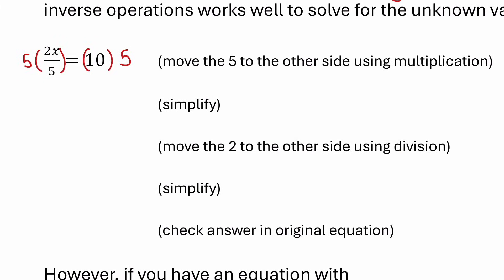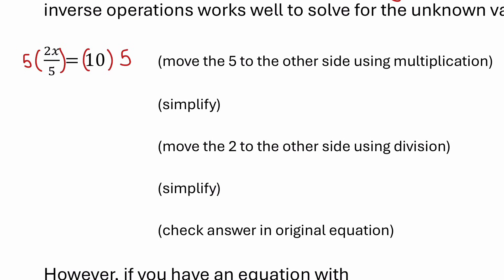As long as we do the same operation to both sides of the equation, the equation stays balanced. We chose to multiply by 5 on both sides because it's going to get this 5 onto the other side. Notice on the left, I have a 5 divided by a 5 — 5 divided by 5 is 1, so I can cancel out those 5s, leaving just 2x on the left.